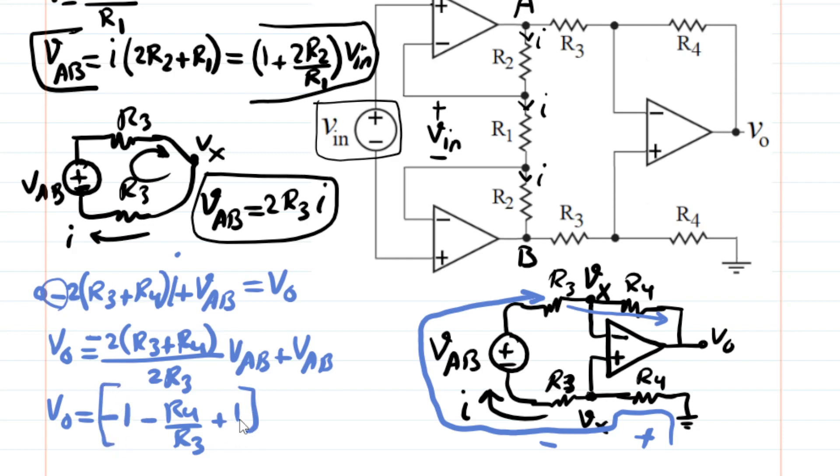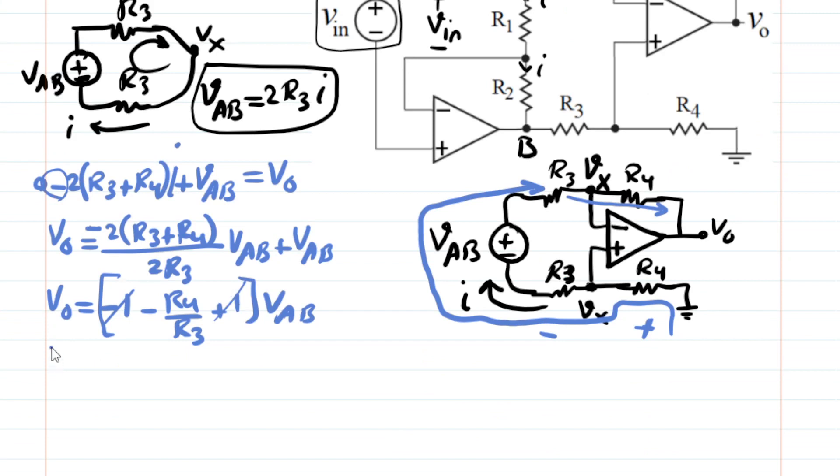And these two cancel out, of course. And what we get is the nice outcome, which says V out over VAB. Or maybe we just stick with this and use another substitution.